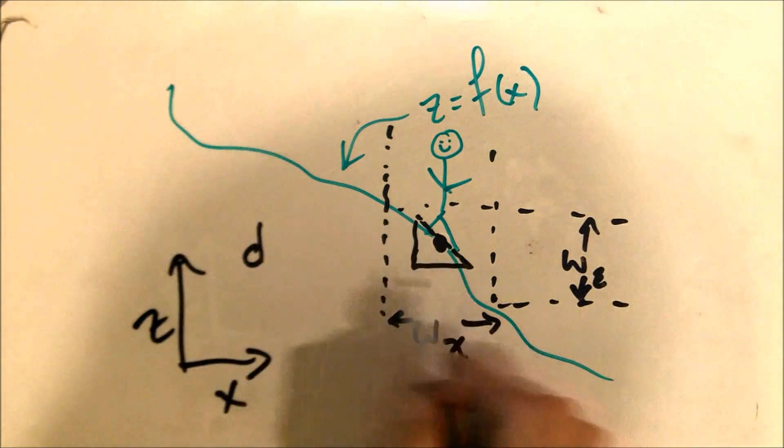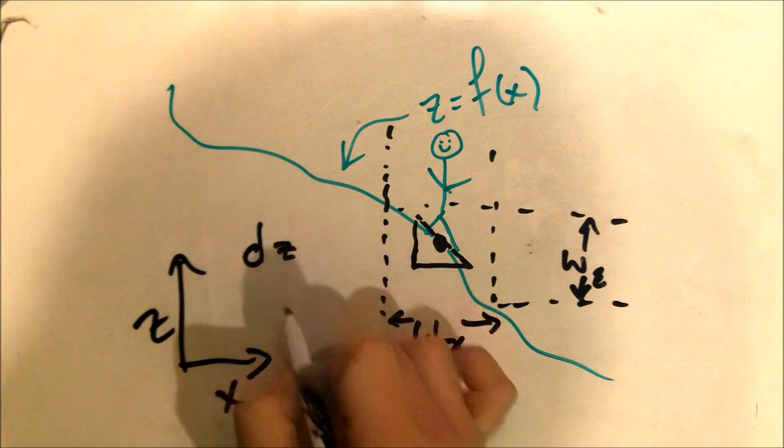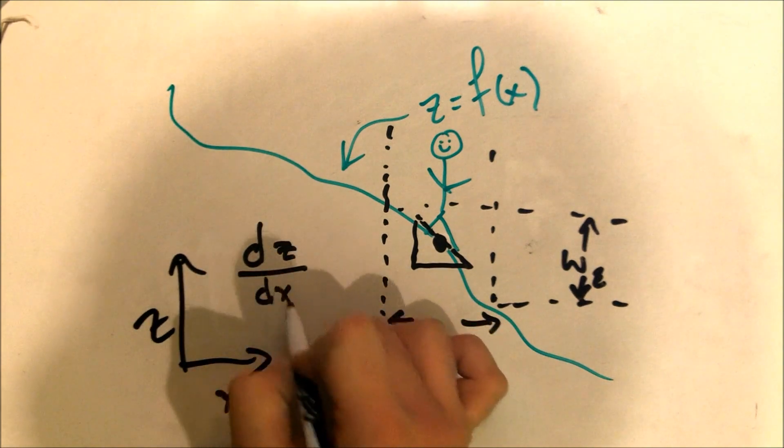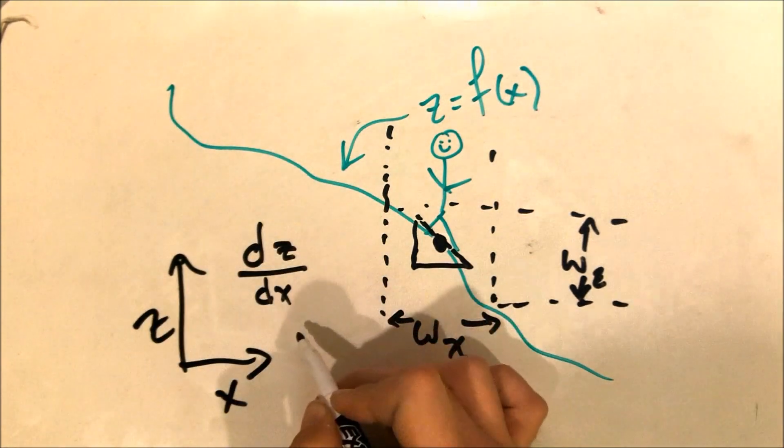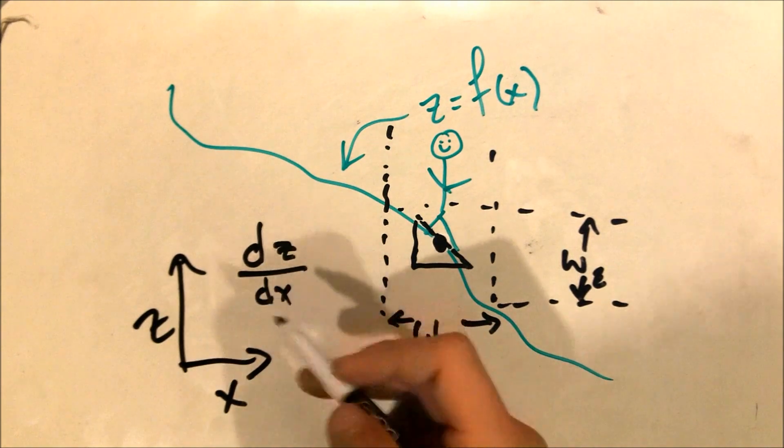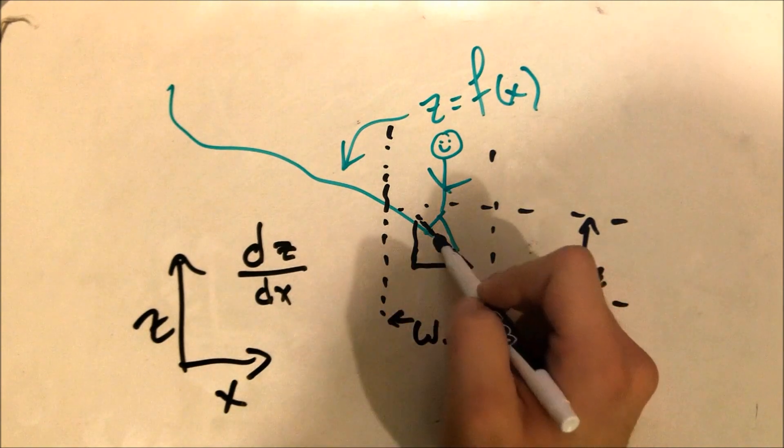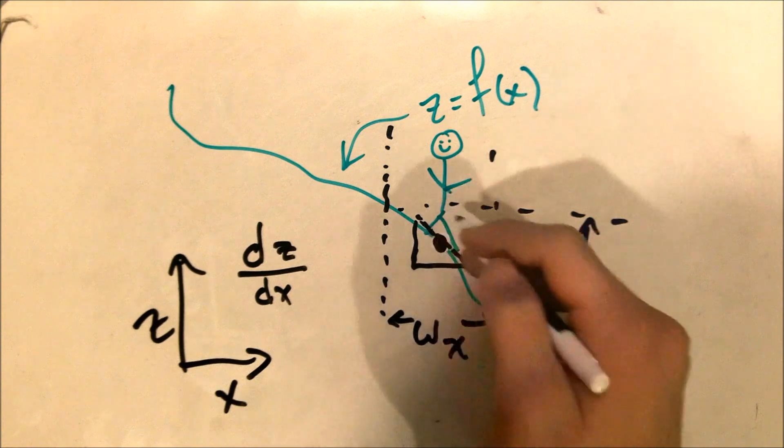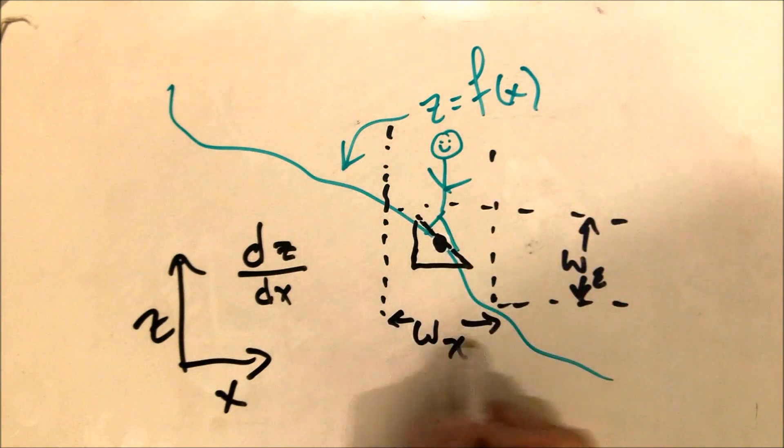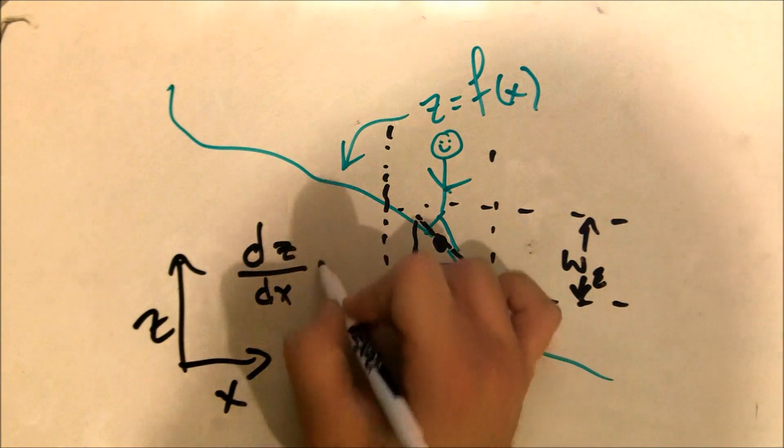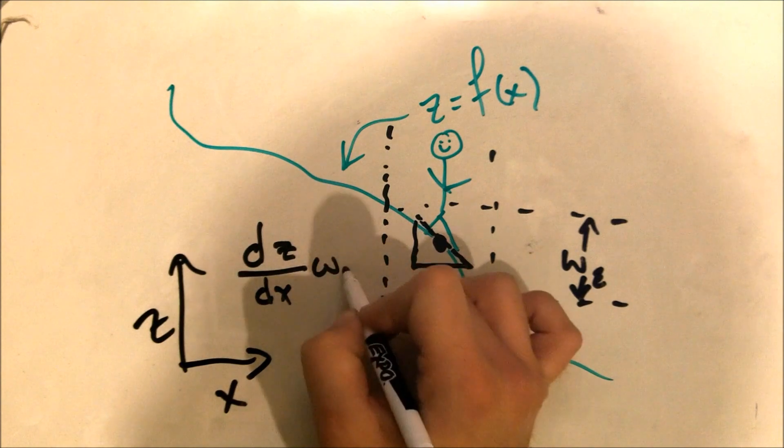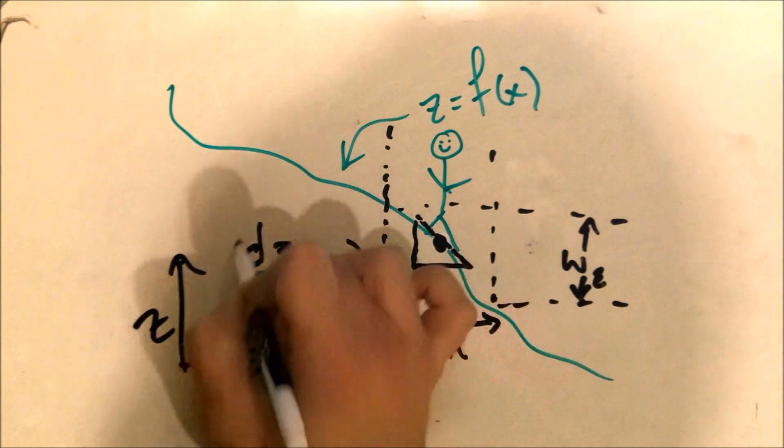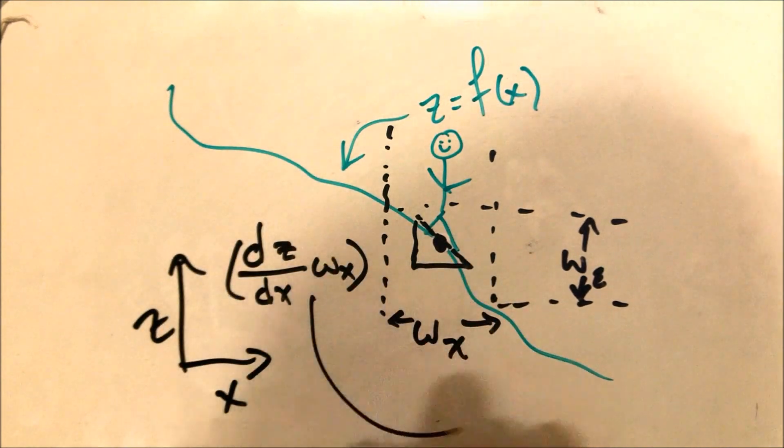Well, when we do that, we're actually taking some differential element dZ by dX. This is the rise, this is the run, so dZ by dX is the slope. We recognize this. This is the derivative. So we take the function derivative at that point, and then multiply it by omega-X. And that gives us omega-Z.